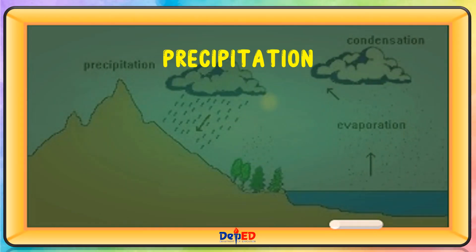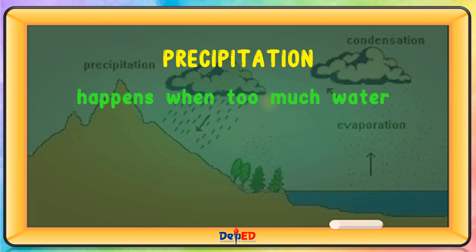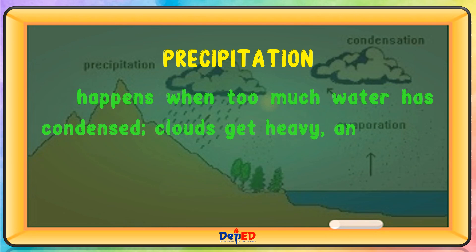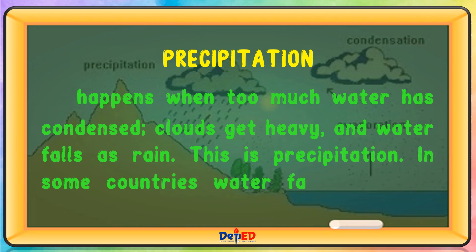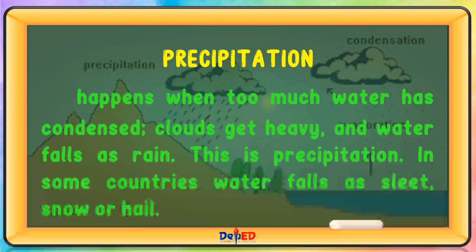Precipitation happens when too much water has condensed. Clouds get heavy and water falls as rain. In some countries, water falls as sleet, snow, or hail.